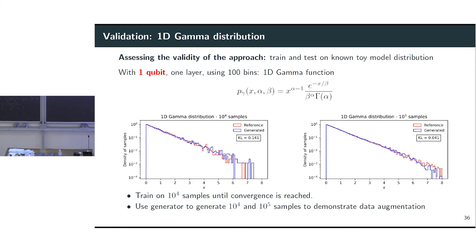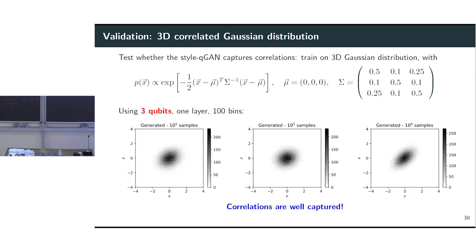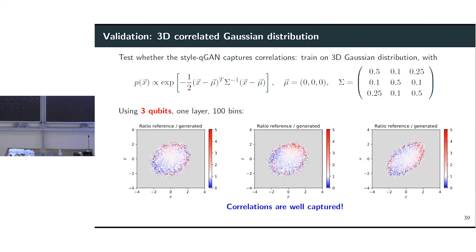The second, slightly more complicated model: a three-dimensional Gaussian with correlations — a standard Gaussian centered with some correlation matrix. Using three qubits and 100 bins for the reference and generator, all the different projections show very compatible results. Plotting the two-dimensional projections confirms that correlations are also preserved, and the ratio to the reference shows quite good quality — degrading only in the tails where statistics are low, which is normal.